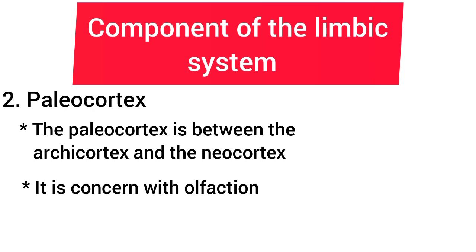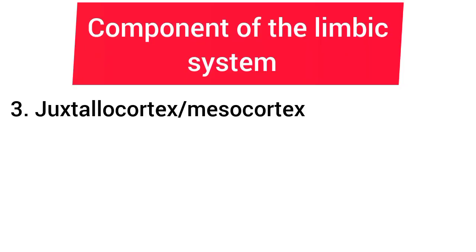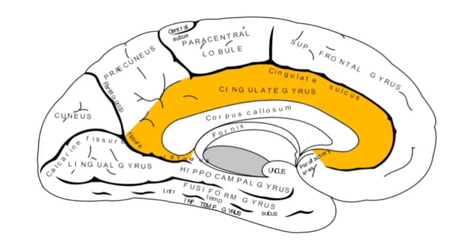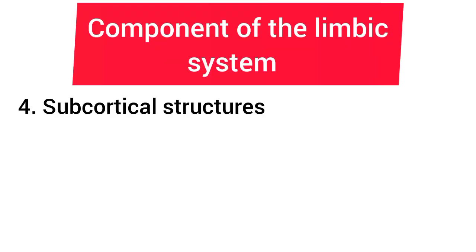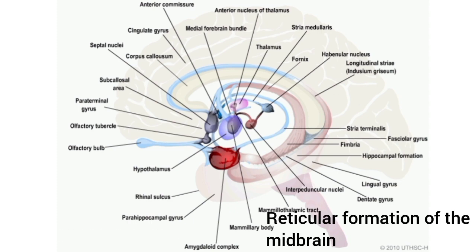The paleocortical structures consist of the piriform cortex and the olfactory tubercle. The juxtallocortex or mesocortex is situated between the paleocortex and neocortex. The juxtallocortical structures include the cingulate gyrus of the limbic cortex and the orbital insulotemporal cortex. The subcortical structures are the amygdala complex, the septal nuclei, the thalamic nuclei, the hypothalamic nuclei, the caudate nucleus, and the reticular formation of the midbrain.